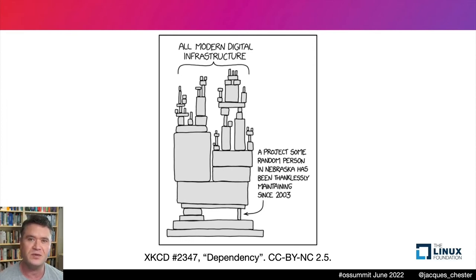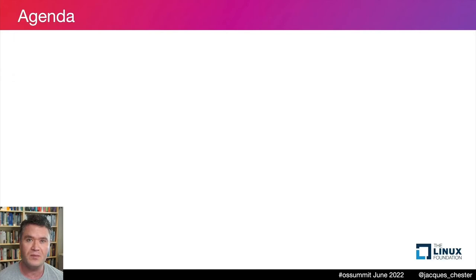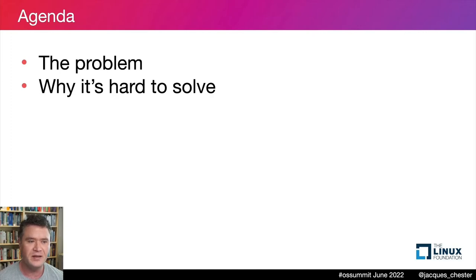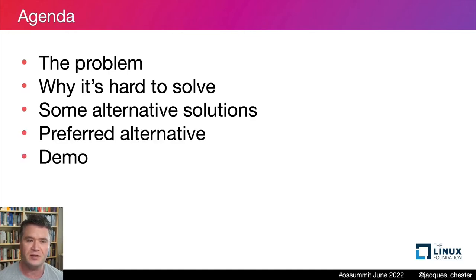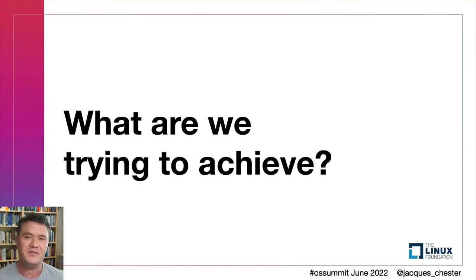Here's our agenda for today. First, we'll talk about what problem we're trying to solve by ranking software projects. Second, what makes it so hard to create such rankings. Third, we'll survey different ways we can rank project risk. Fourth, we'll zoom in on one such option. We'll end with a brief demo and then some conclusions.